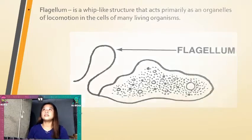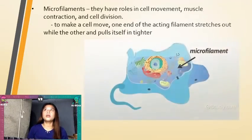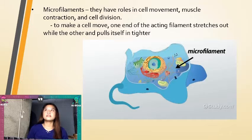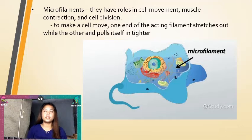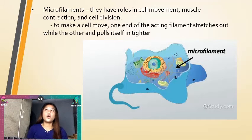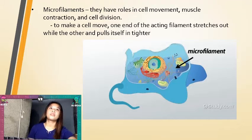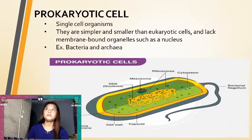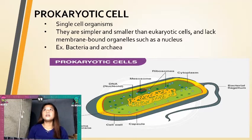Next is microfilaments. They have roles in cell movement, muscle contraction, and cell division. To make a cell move, one end of the actin filament stretches out while the other end pulls itself in tighter.